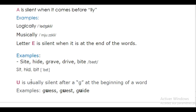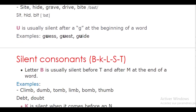What about the letter U? U is usually silent after a G at the beginning of a word. Examples: guess, guest, guide. So the U is not pronounced here.